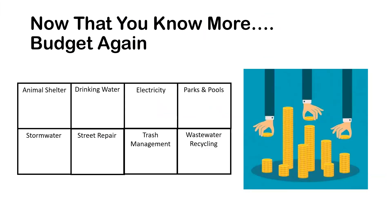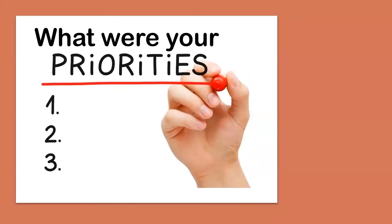Now that you know a little bit more about each of these departments, are you going to re-budget or change around how you divide up the money on your sheet? Push pause and rearrange it to how you think the budget should look now that you know a little bit more about each department. Were things a little bit different this time? Did you put more money into different departments or did you keep it the same?